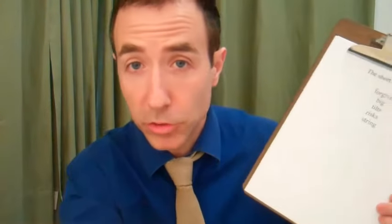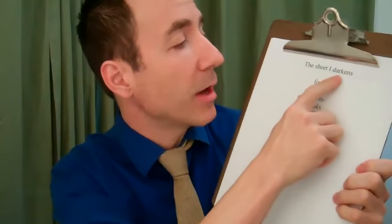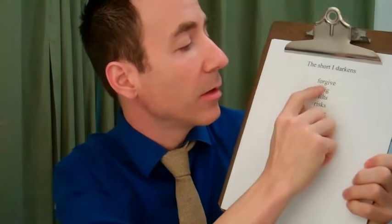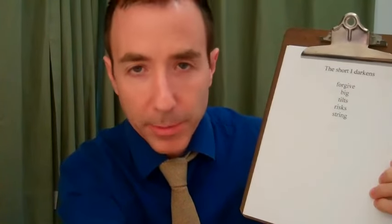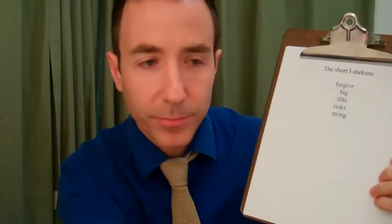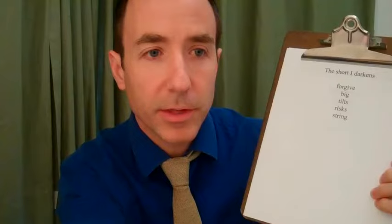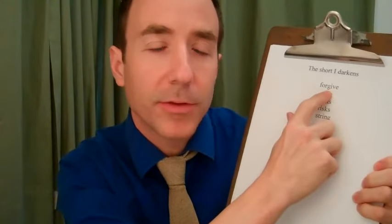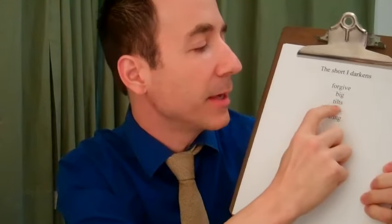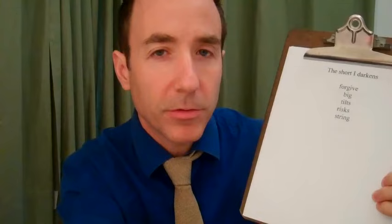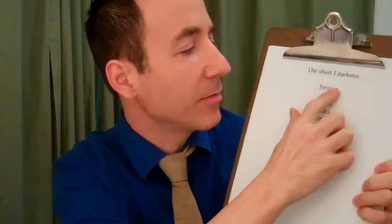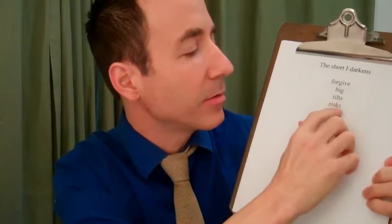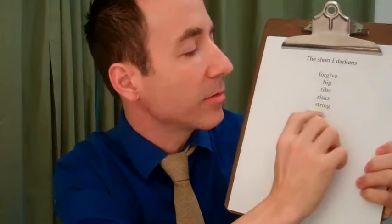The first change we'll go over — and all this can be found in the Show More section — is the short 'i' will darken. In the American accent this will be very clear: forgive, big, tilts. But when speaking with a Swedish or Norwegian accent, we're going to say: forgive, big, tilts, risks, string.